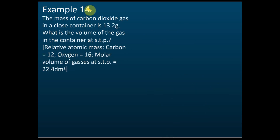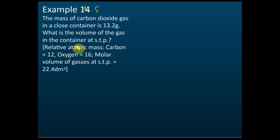Example 5: The mass of carbon dioxide gas in a closed container is 13.2 grams. They give you the relative atomic mass and the molar volume, and ask you to find the volume of the gas. Try to find the volume — 13.2 grams of carbon dioxide equals how many cm³ or dm³?